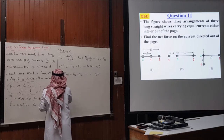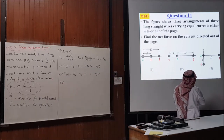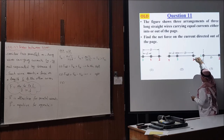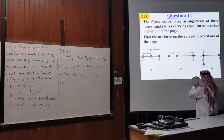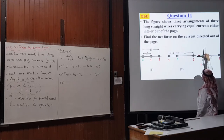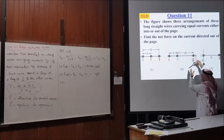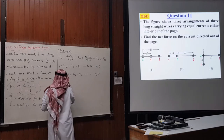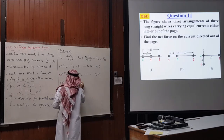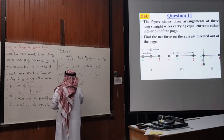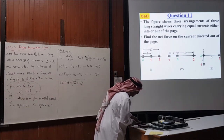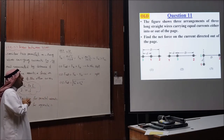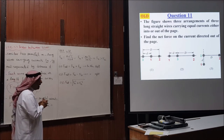In arrangement three, the net force is √(F₃₁² + F₃₂²), and you can find the angle it makes — it will be in the second quadrant. This concludes the first topic: the magnetic force between parallel current-carrying wires.